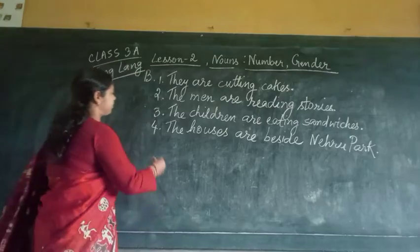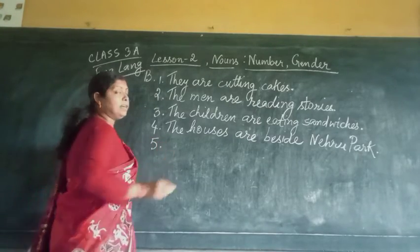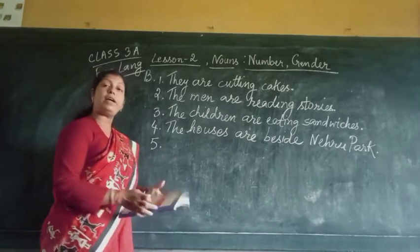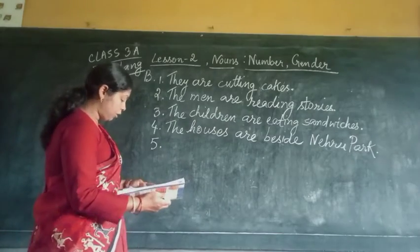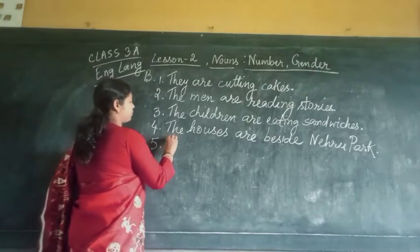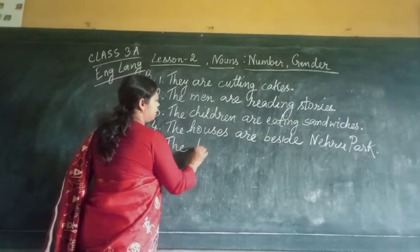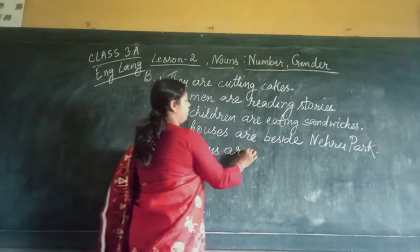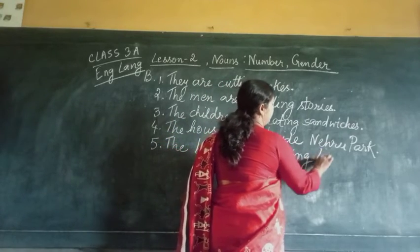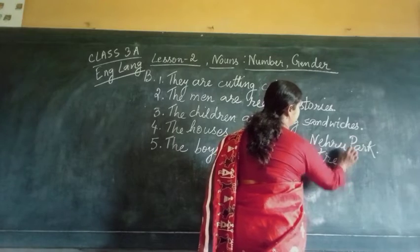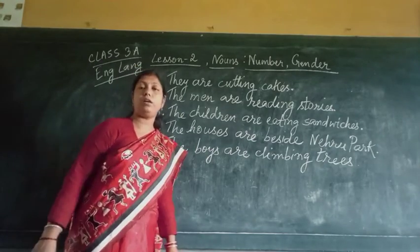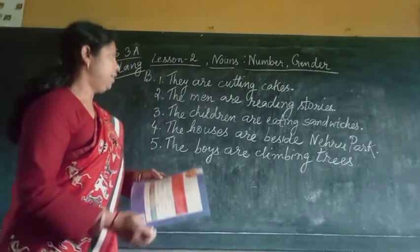Number 5: The boy is climbing the tree. We are changing the verb according to the sentence. So: The boys are climbing trees. Here both 'boys' and 'trees' are regular plurals.